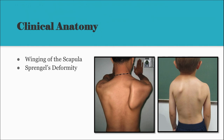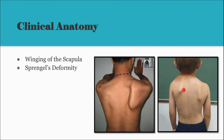Sprengel's deformity is a congenital anomaly involving dysplasia or hypoplasia of the scapula. The scapula develops in the cervical region and then descends downwards; failure to descend results in a higher anatomical location of the scapula. Attempting to bring it down forcibly in surgery risks injuring the brachial plexus.